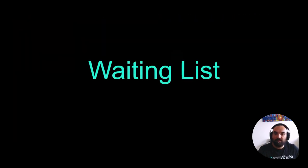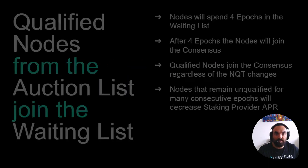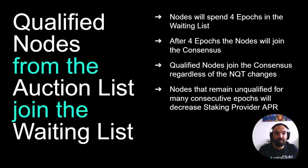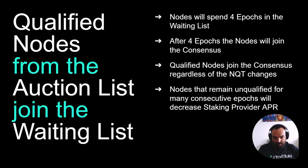So let's talk about the waiting list. The waiting list represents the nodes that have been qualified from the auction list. This means all nodes from the auction list that had an NQT equal to or greater than the average network NQT are qualified. They then go into the waiting list, from which they will join the consensus, but only after four epochs — roughly four days.